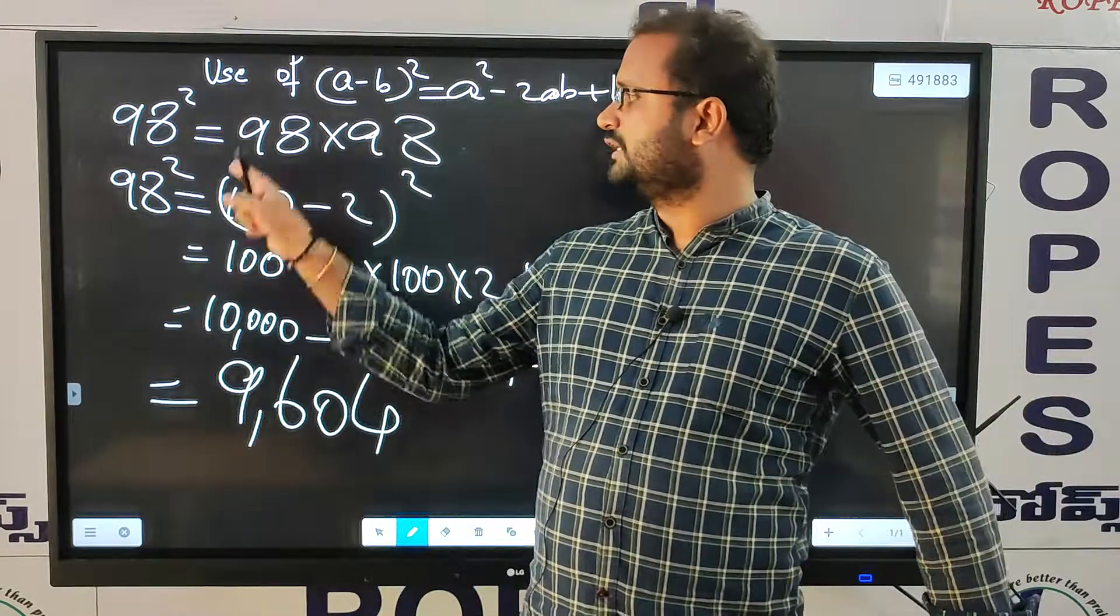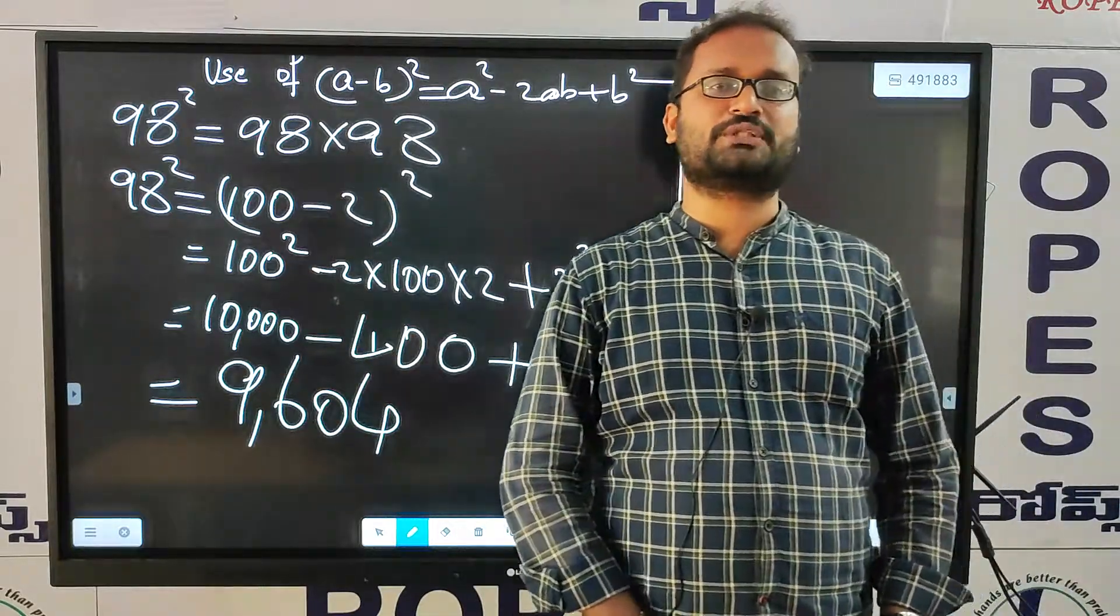So the answer is 9,604. This is how we can write it. You can directly multiply or you can find the answer this way. Thank you.